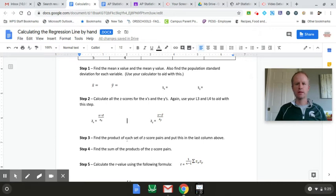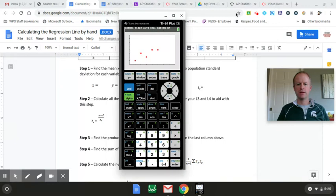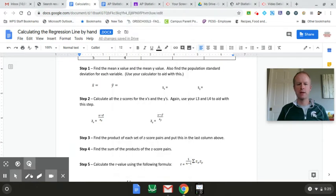All right, so hopefully you've had a chance to try that and we are going to talk about what results we got. So if we were in class we'd have at least 10 minutes to work through that process and then we would make sure we all agree. So I have my data in my calculator. I made a scatter plot of the data.